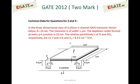We are discussing common data questions, and the common data given is: for the given three-dimensional view of a silicon N-channel MOSFET, lambda is equal to 20 nm, the transistor is of width 1 µm, the depletion width formed at every PN junction is 10 nm, relative permittivity of silicon and silicon dioxide are 11.7 and 3.9, and epsilon naught, free space permittivity, is 8.9 × 10⁻¹² F/m.